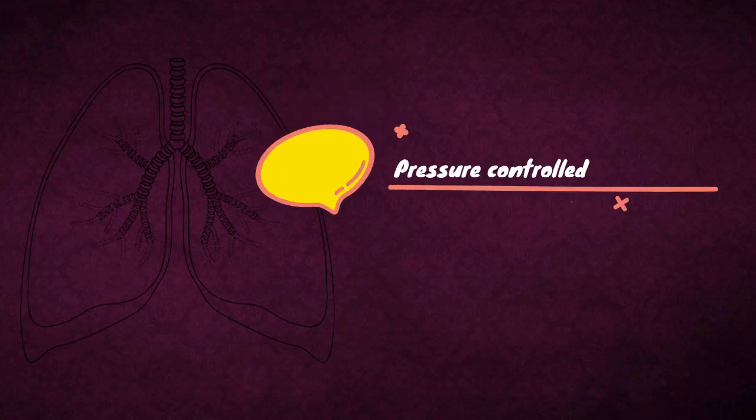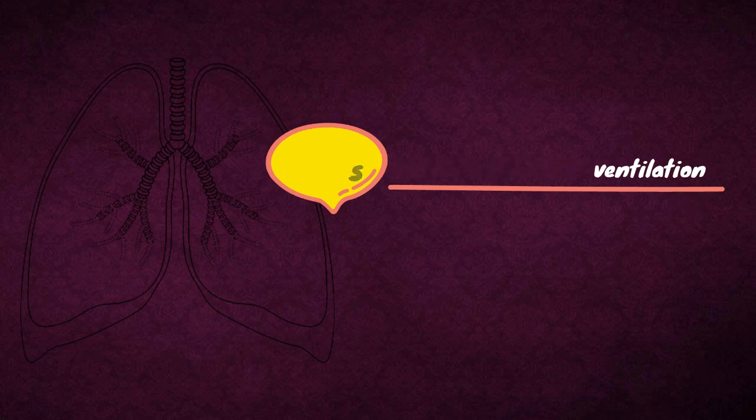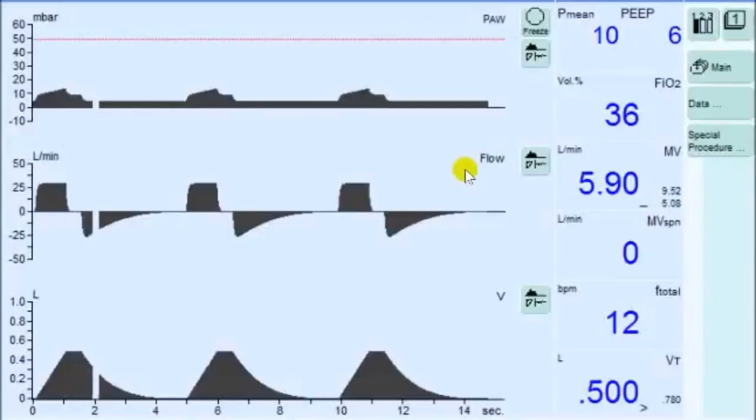The next ventilation method is pressure controlled ventilation. During pressure controlled ventilation, two pressure levels are kept constant. The lower pressure level,